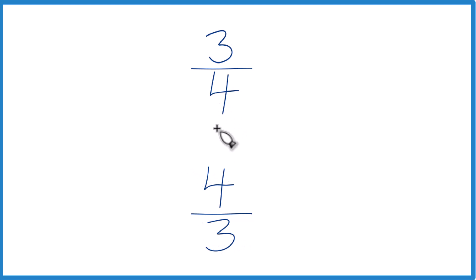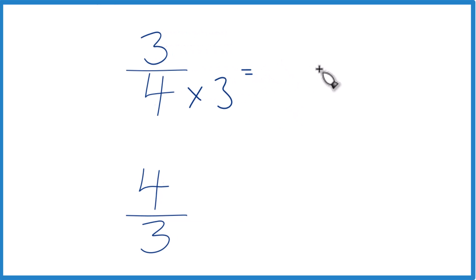But if you didn't know that, you could try to find a common denominator, something that goes into 4 and 3 evenly. And the way we could do that is multiply 4 times 3, because that would give us 12. And then down here, we could multiply 3 times 4. That would give us 12. And then we'd have a common denominator.